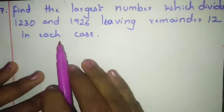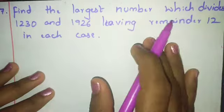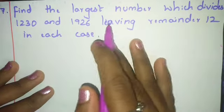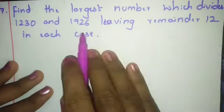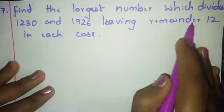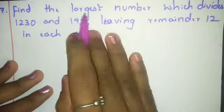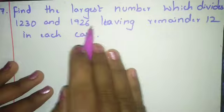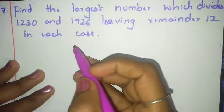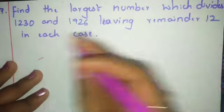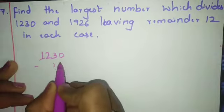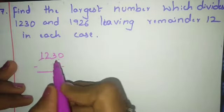Find the largest number which divides 1230 and 1926 leaving remainder 12 in each case. Since the remainder must be 12 in both cases, subtract 12 from both numbers: 1230 minus 12 and 1926 minus 12.